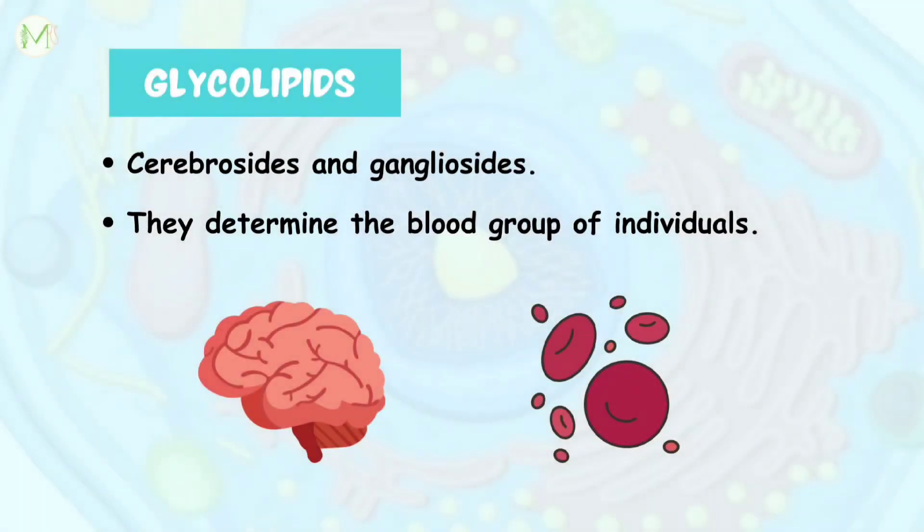The next class of lipids found on cell membranes are glycolipids. They are particularly abundant in the human brain and gastrointestinal tract. The glycolipids present in the cell membrane are gangliosides and cerebrosides. The glycolipid present on the surface of a red blood cell determines the blood group of a person.